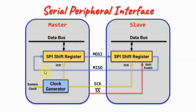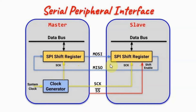Serial communication between the master and the slave is achieved by using three-wire communication. We have the master out slave in, master in slave out, and the serial clock. The master out slave in line is used when the master device is transmitting serial data to the slave device, and the master in slave out line is used when the slave is transmitting data to the master device. The communication between the two is full duplex, meaning both devices can communicate with each other at the same time.